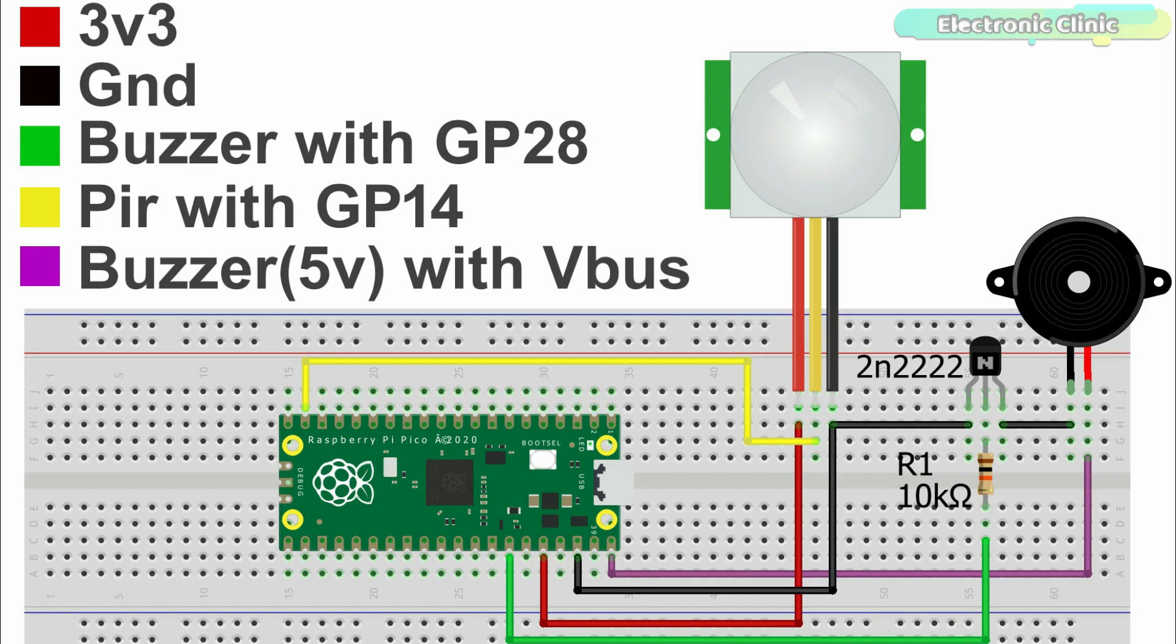This is a 5V buzzer and it can't be directly controlled using the Pico board. So that's why I'm using this driver circuit to turn on and off this buzzer.